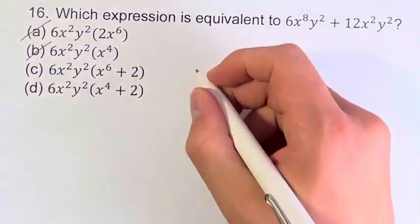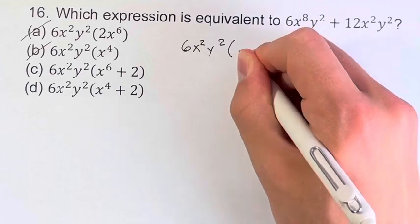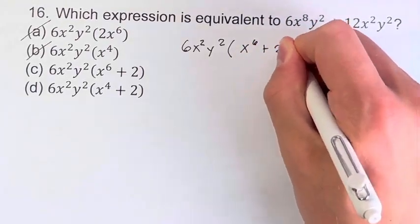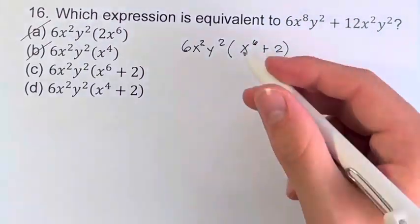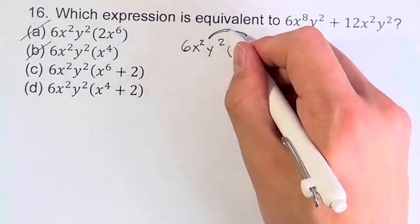So for c, we have 6x squared y squared times x to the sixth plus 2. What we're going to do is we're going to multiply this by this and then this by that.